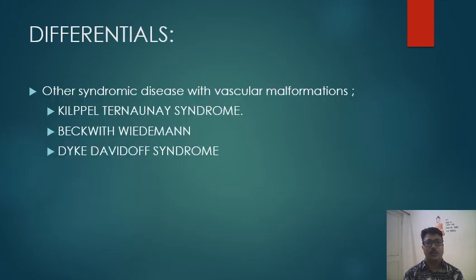Differentials include other syndromic diseases with vascular malformation such as Klippel-Trenaunay syndrome, Beckwith-Wiedemann syndrome, and Divry-van Bogaert syndrome. Klippel-Trenaunay and Beckwith-Wiedemann syndromes also present with a port wine stain, whereas Divry-van Bogaert syndrome presents with unilateral cerebral atrophy.